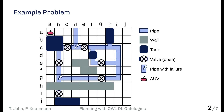Here you can see a typical problem that we would like to solve. In the top left corner we have an autonomous underwater vehicle — the autonomous robot that should solve the mission. We divided the world into a grid to make things easier. In the world you can also find underwater infrastructure: tanks, sections of pipes, and on some of the pipes there are valves that are currently in an open position.